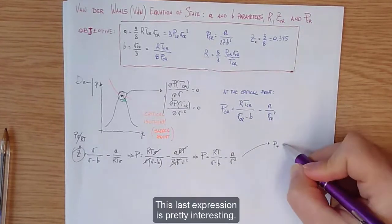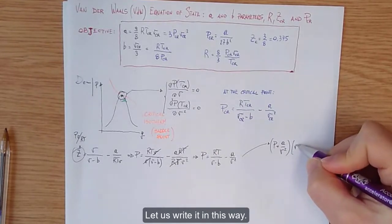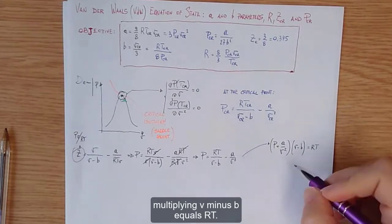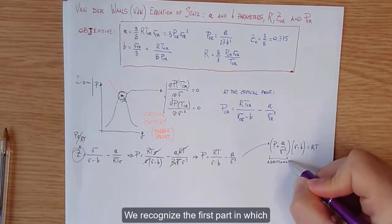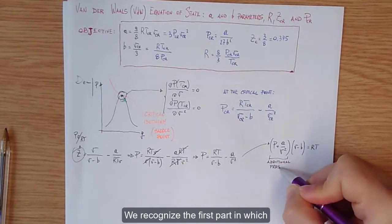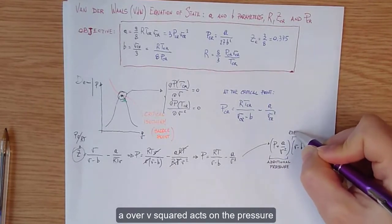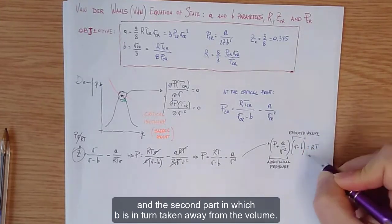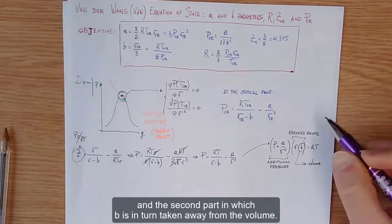This last expression is pretty interesting. Let us write it in this way: p plus a over v squared, multiplying v minus b, equals RT. We recognize a first part in which a over v squared adds on the pressure and a second part in which b is a term taken away from the volume.